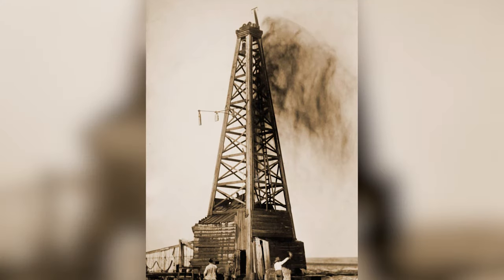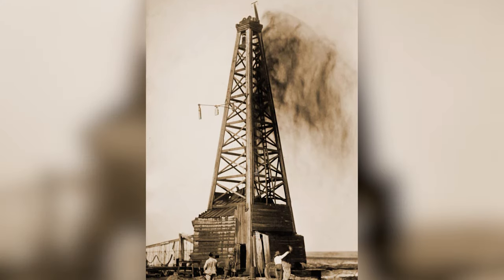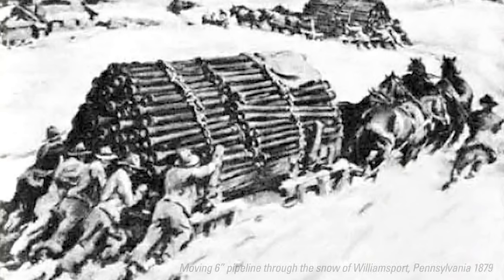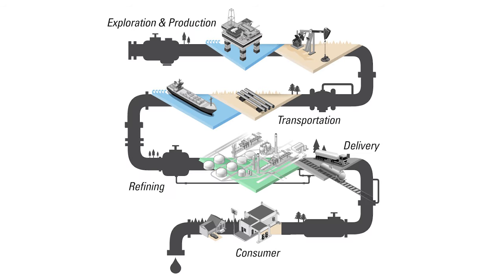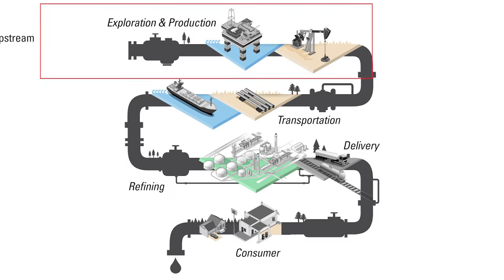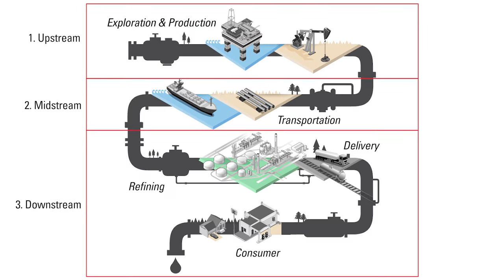This derrick was needed to pump oil to the surface. Getting the product to market has always been a challenge — this was the beginning of the midstream sector. Once the resources reach the surface, like most commodities, they have to be delivered to the market. This flow chart shows the three different sectors of the oil and gas industry.